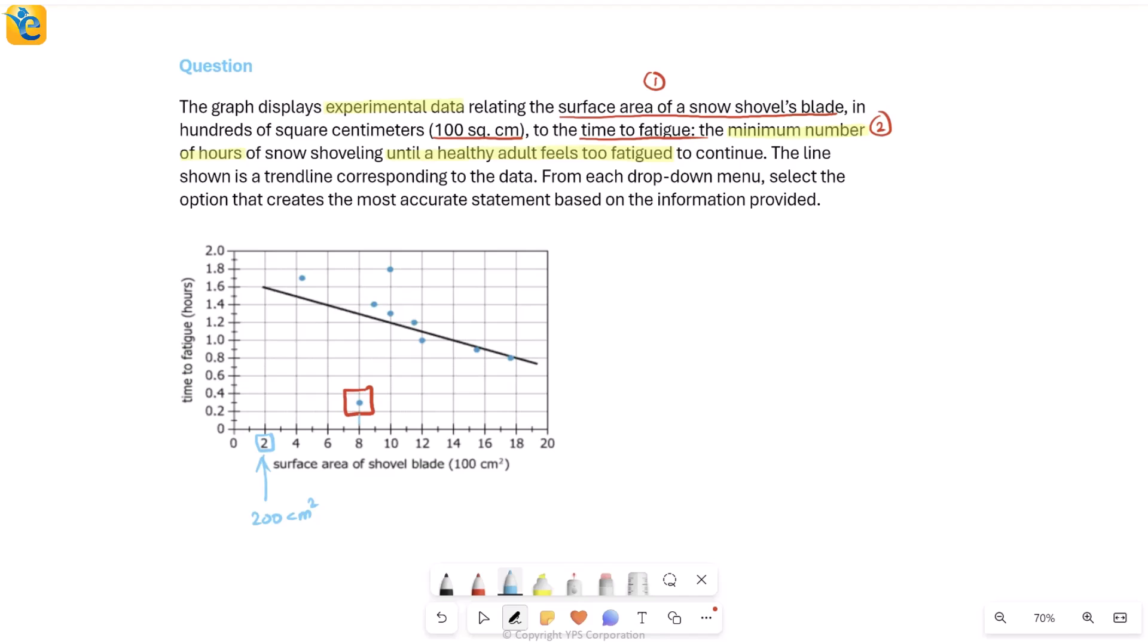Suppose I take this data point. The value on the x-axis is 8 and the corresponding value on the y-axis is 0.3. If somebody uses a shovel with surface area of 800 centimeters squared, the minimum number of hours until a healthy adult feels too tired is 0.3, which means a healthy adult can use this shovel for this duration before getting tired.